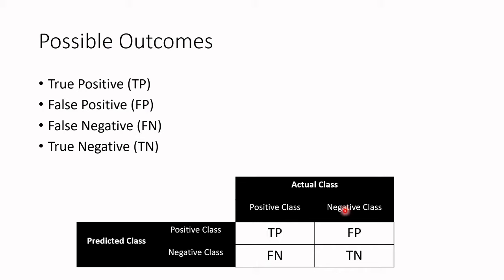Now looking at the positive class, if the model was incorrect and predicted it as positive, then we refer to that as a false positive. And if the model was correct and predicted it as negative, then we refer to that as a true negative.